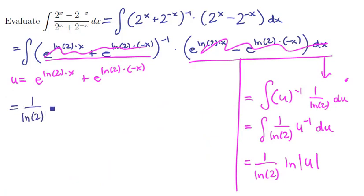1 over the ln of 2 times the natural logarithm of the absolute value of u, which was the expression e to the ln of 2 times x plus e to the ln of 2 times negative x.